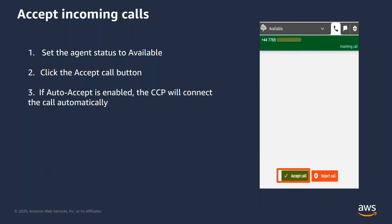To accept incoming calls in the CCP, make sure your status is set to available. When a call is routed to you, you will receive a notification to accept or reject the call. Click the accept call button and start talking to your customers. If auto accept was enabled for your configuration, your call will be auto answered by the CCP and you can promptly start talking to your customers.